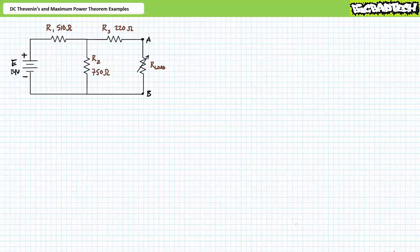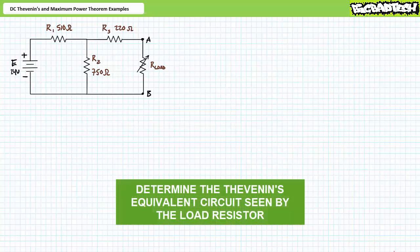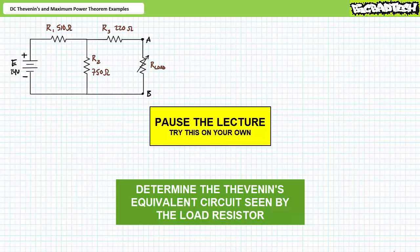Our first example problem features a series-parallel combination of four elements. Stage one necessitates we solve for the Thevenin's equivalent circuit seen by the variable load resistor, RLOAD. Once we've got these values, we'll move on to stage two and examine maximum power transfer for this circuit. By all means, pause the lecture and try stage one on your own.